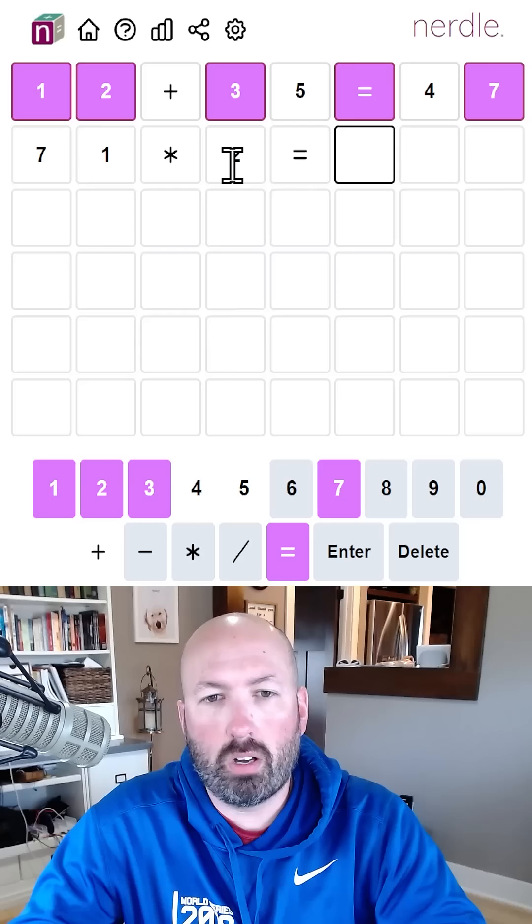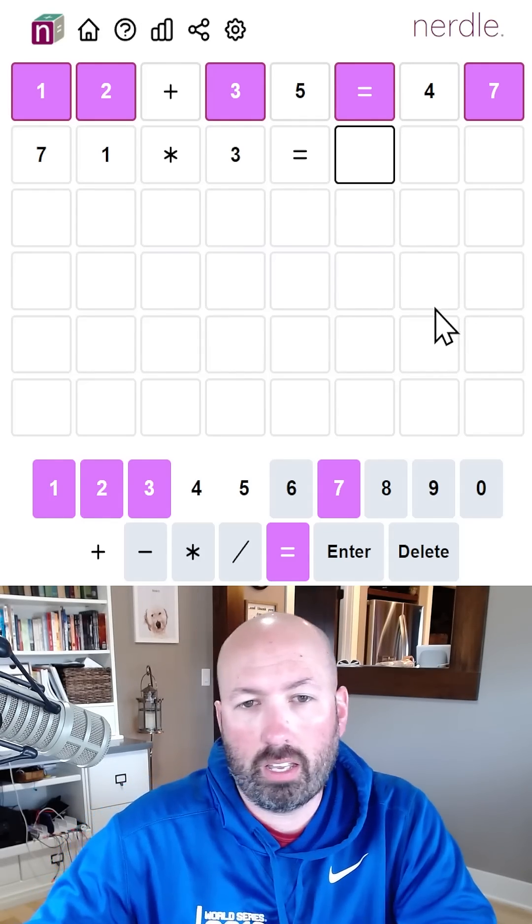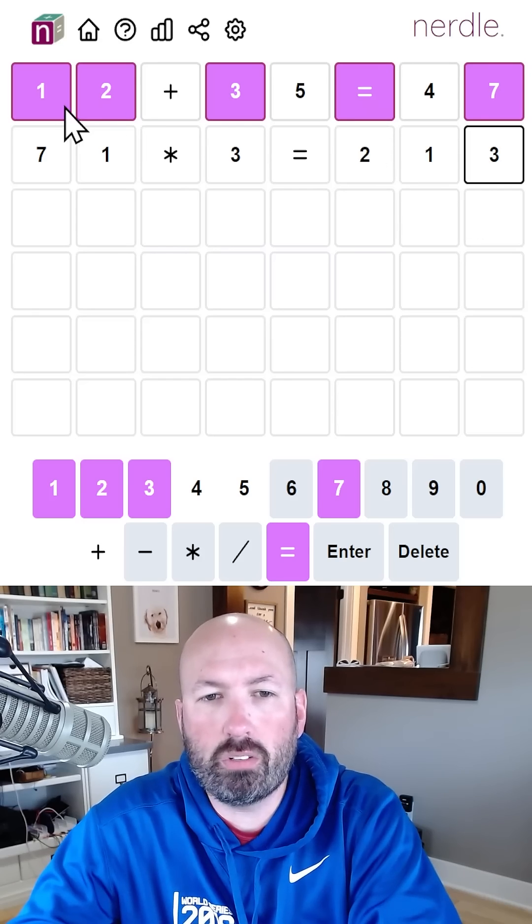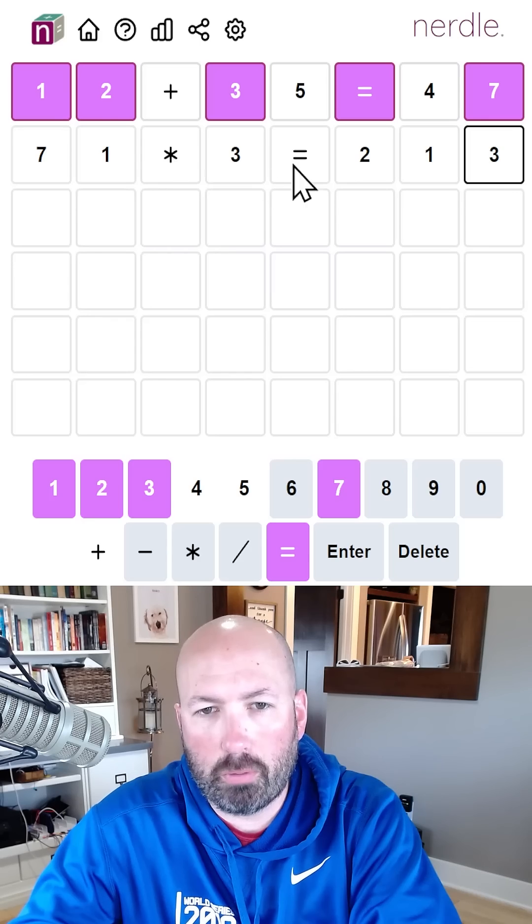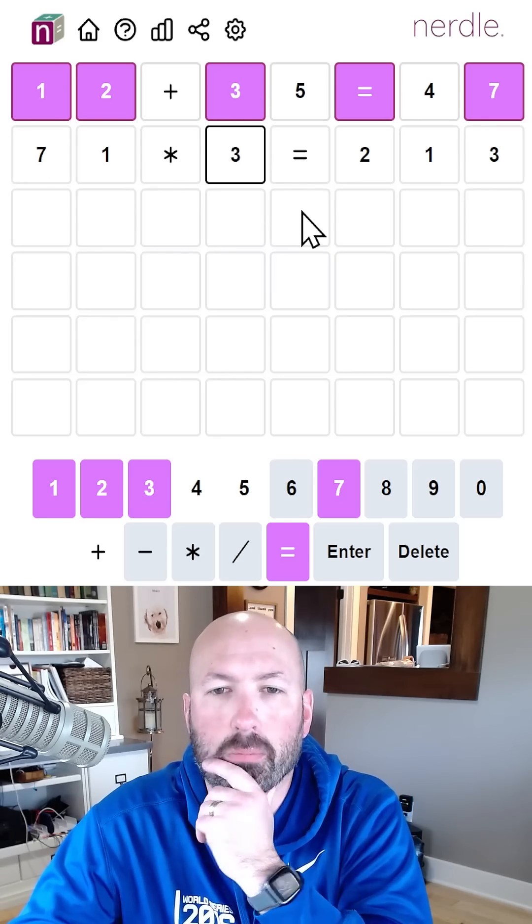Maybe 71 times three would be 213. That seems pretty good. That uses all of our digits. It doesn't let us check if there's a six, eight, or nine, but we will see if it's multiplication and equals, and we get more... Oh, but there's no three right here, so that can't be it.